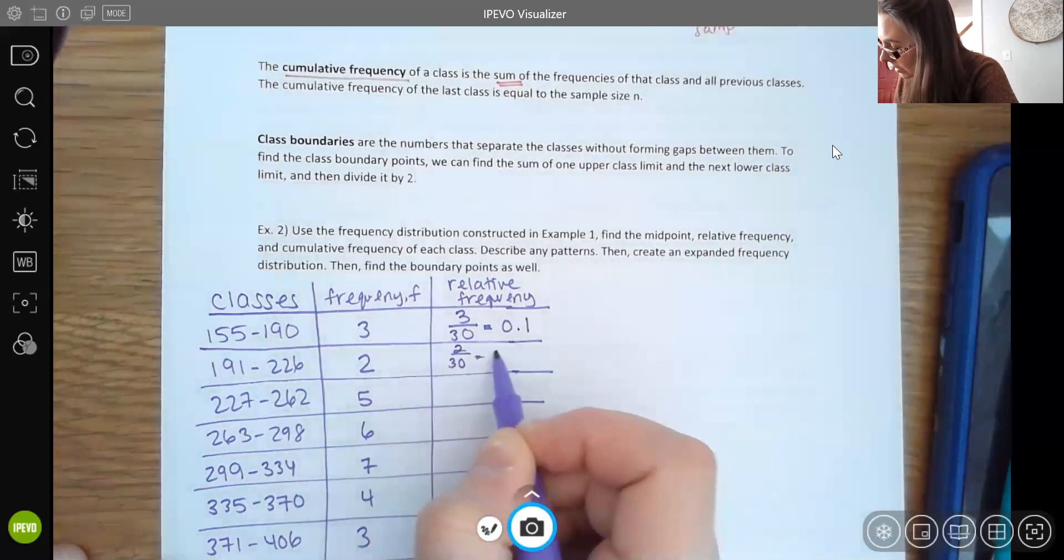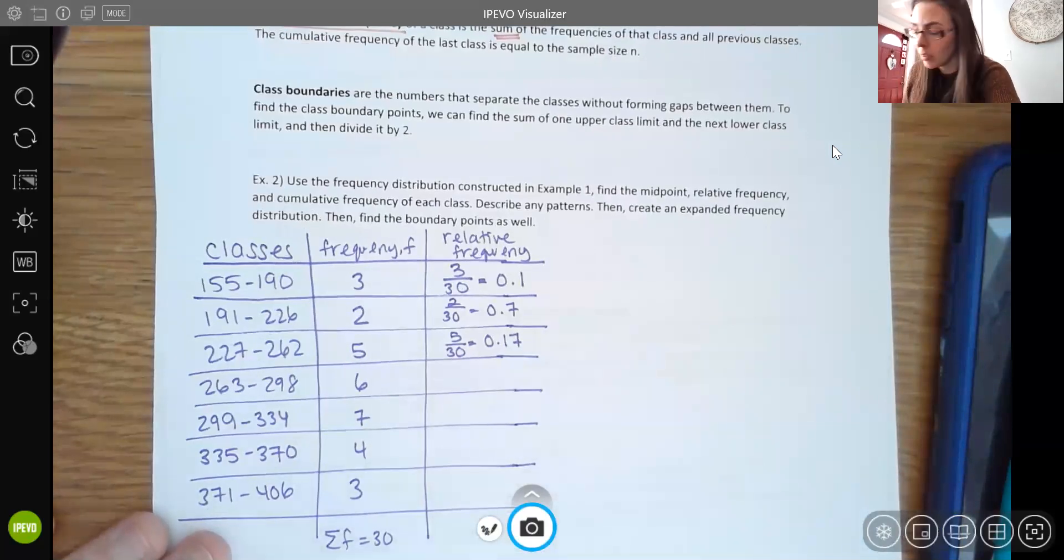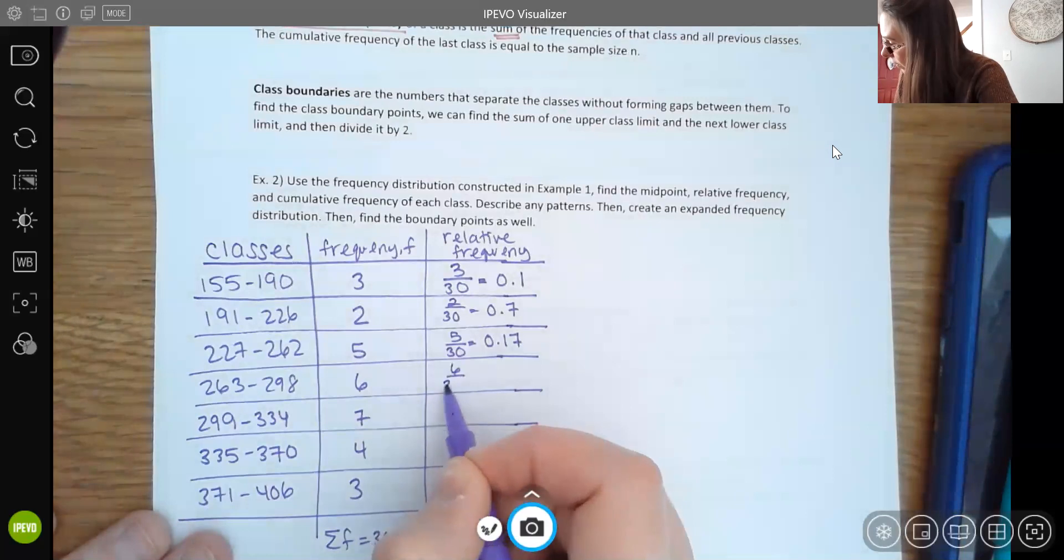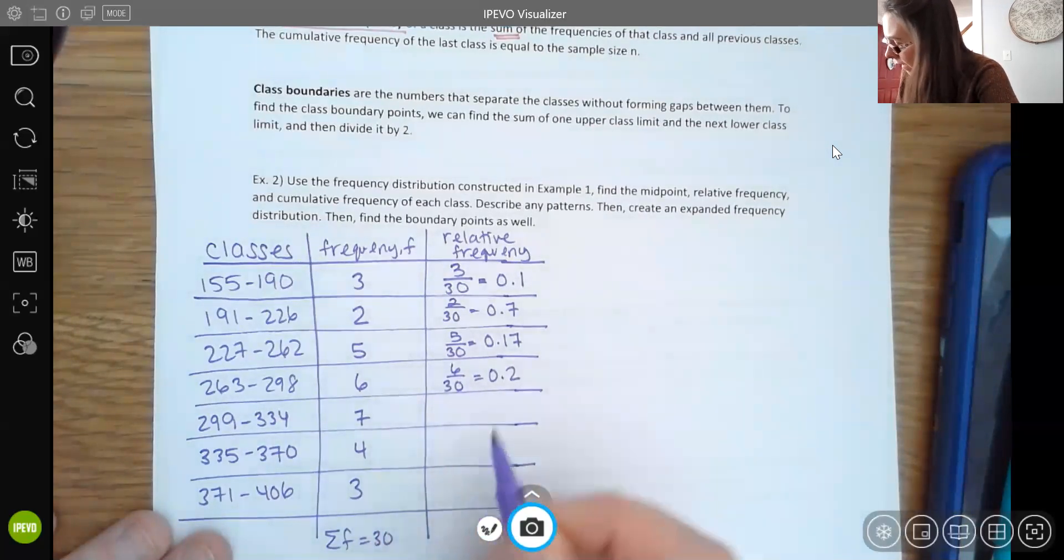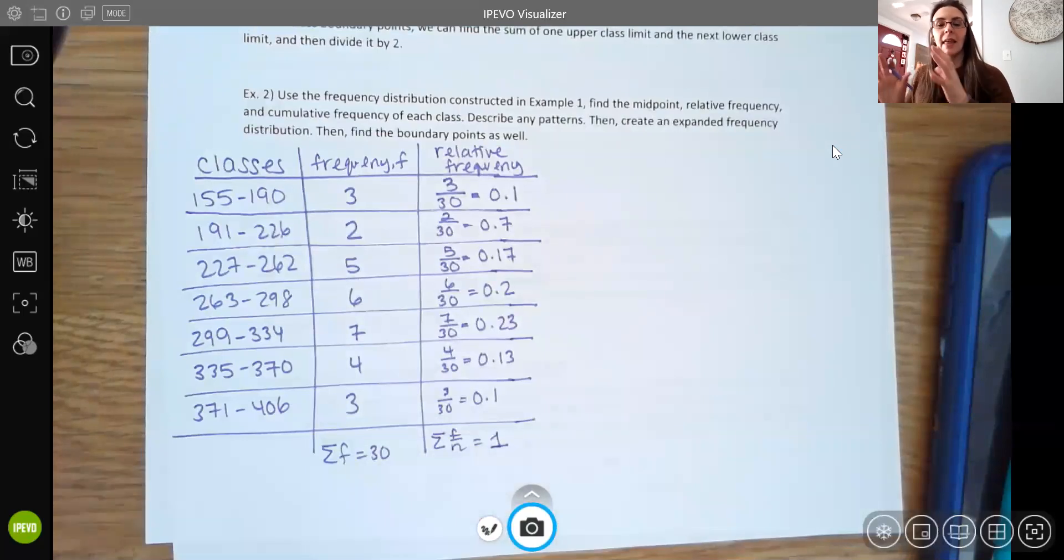And then for the next one, you're going to do two divided by 30 and you get 0.07. Five divided by 30, you're going to get 0.17. So some of these I'm rounding. You can round to two decimal places or maybe three if you need it. Here, I'm going to do six divided by 30, which is 0.2 even. Then I have seven divided by 30, 0.23 approximately. And then four divided by 30 is about 0.13. And three divided by 30 is about 0.1.